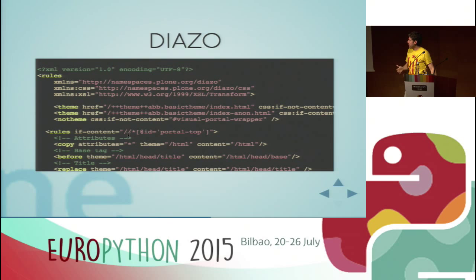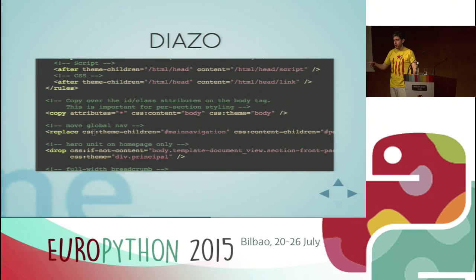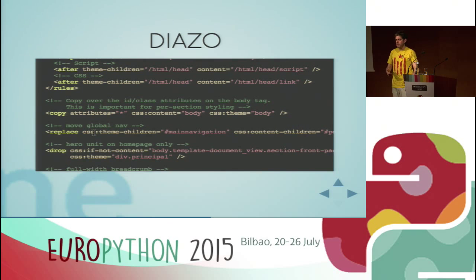Diazo: it's a way of defining themes. You go to your designer and say 'I need to do this webpage - just design it.' The designer makes it, it gets converted to HTML. You give it to the Plone guys, and with Diazo rules you say 'I want this div to be this div from Plone, this piece here is this piece here.' You can create your theme without doing heavy integration. That's also a really cool thing.